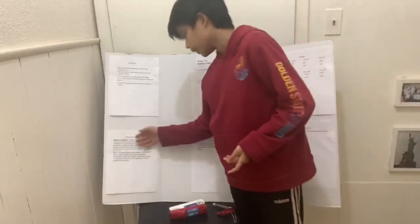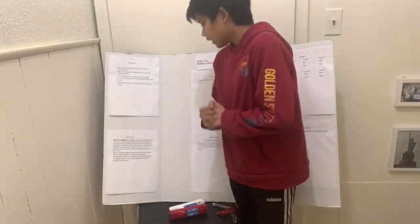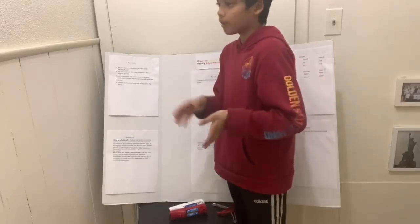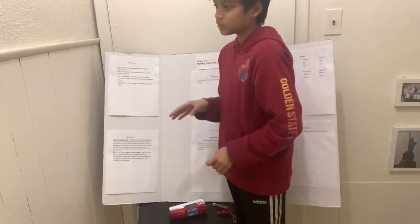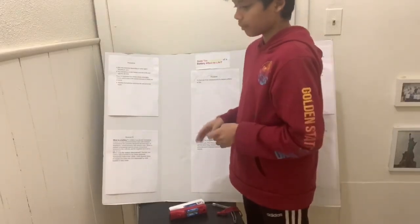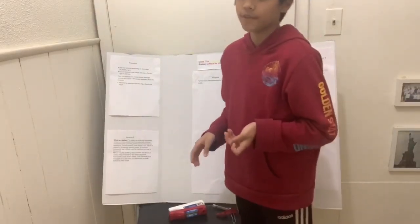I searched up what is a battery and when was the battery discovered. I figured out that a battery is a device containing one or more electrochemical cells, and the battery was discovered by an Italian physicist in the 1800s.